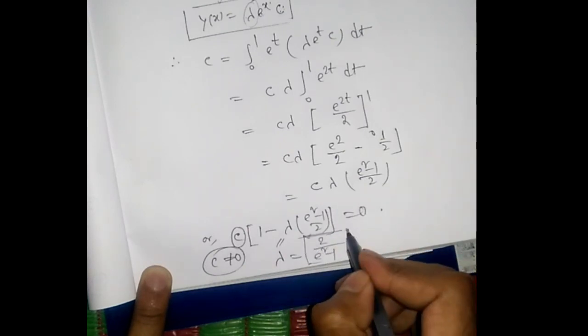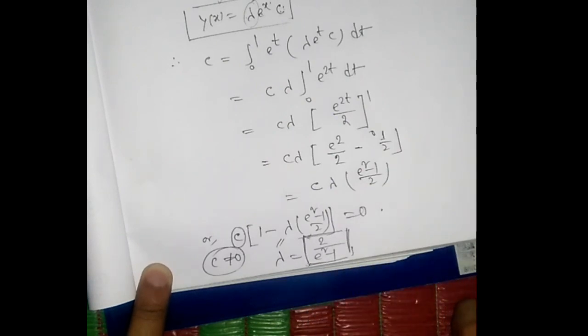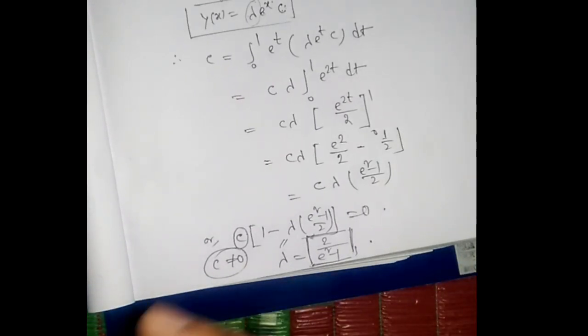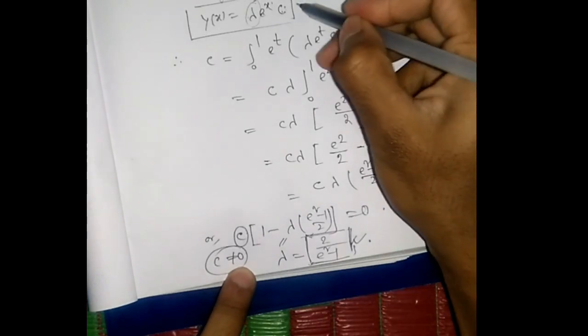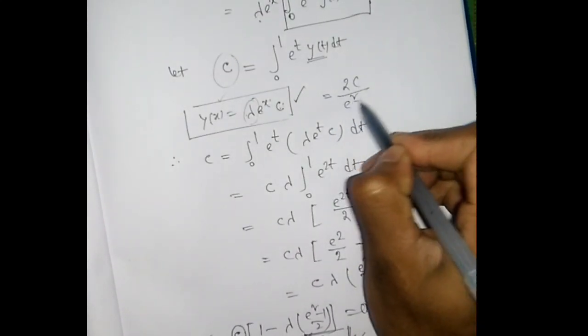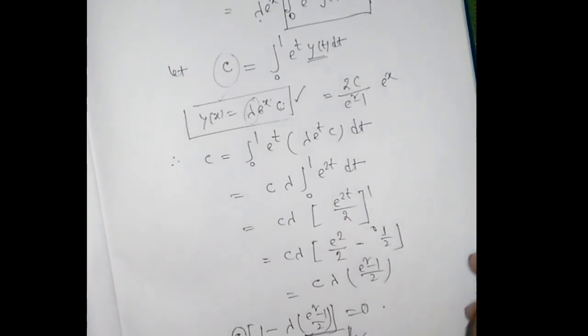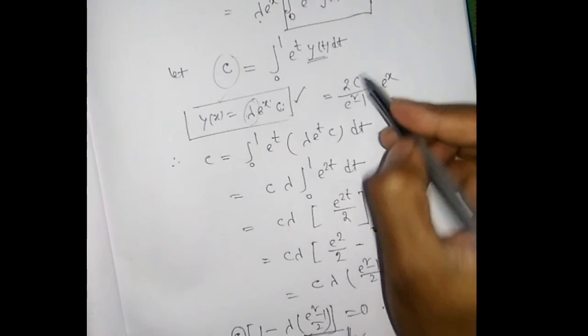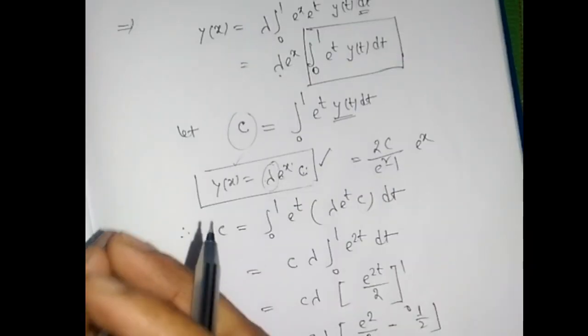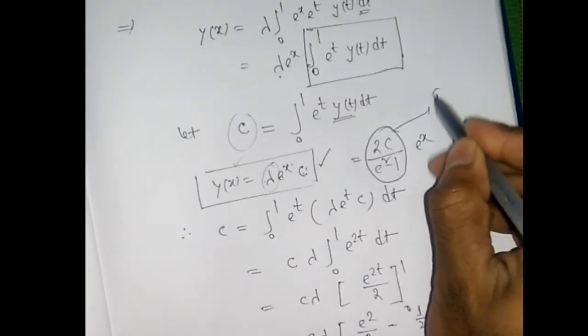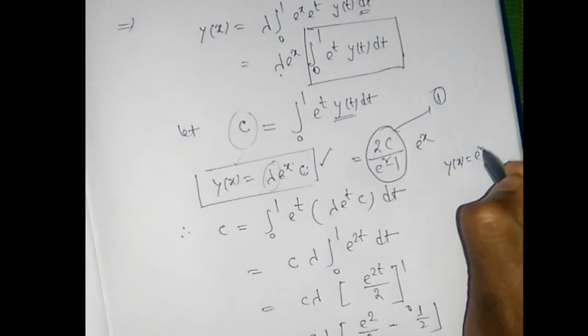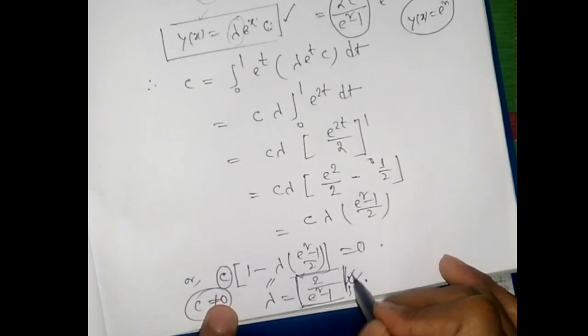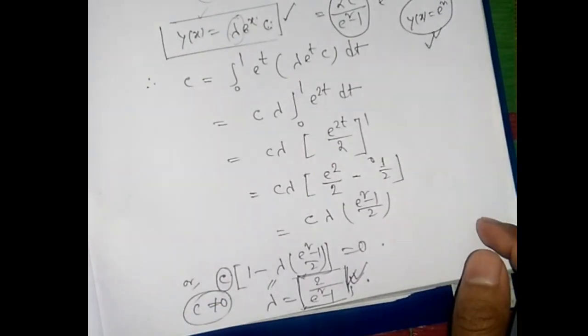Now we find the eigenfunction. Substituting λ = 2/(e²-1) back, y(x) = [2/(e²-1)] · C · eˣ. For the eigenfunction we always take the constant as unity, so the corresponding eigenfunction is y(x) = eˣ. Number two is now solved.